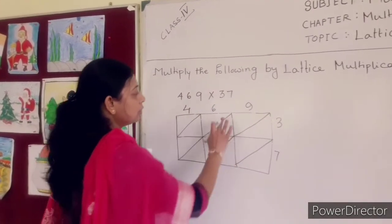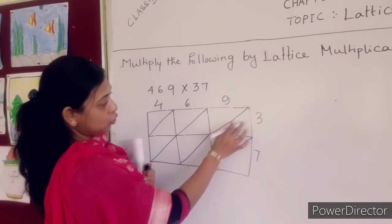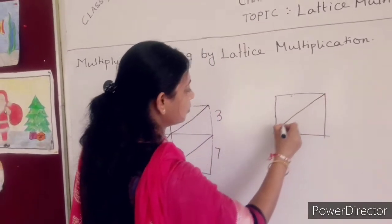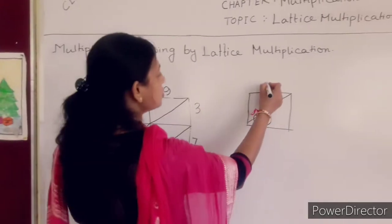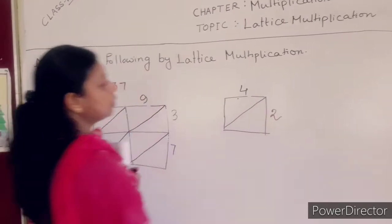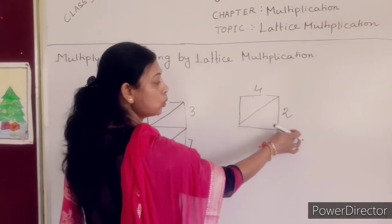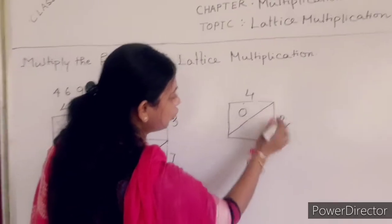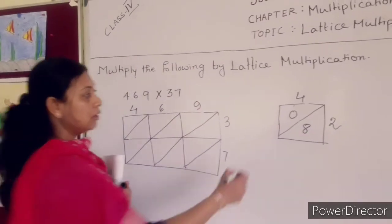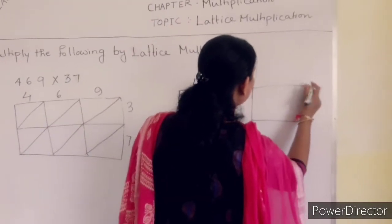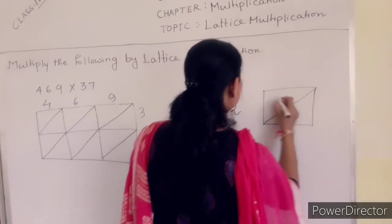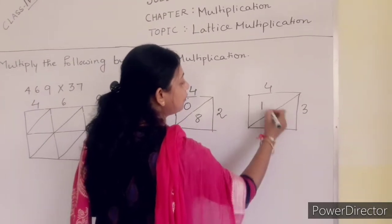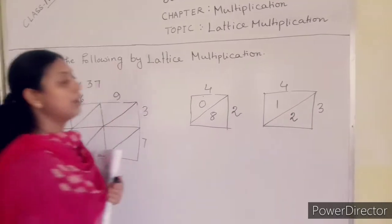How do you solve this one? There is one box — suppose I am drawing this box only. If the digit is a single digit, for example 4 into 2 is 8, above the diagonal you write 0 and below the diagonal you write 8. If after multiplication you get a 2-digit number — suppose 4 into 3, so 3 into 4 is 12 — above the diagonal you write 1 and below the diagonal you write 2.